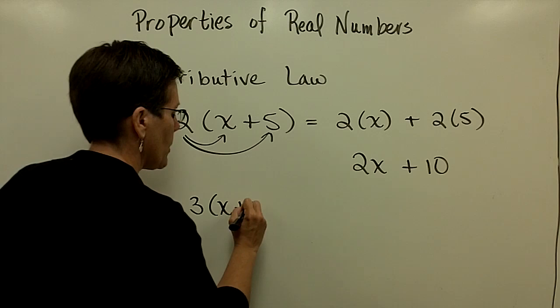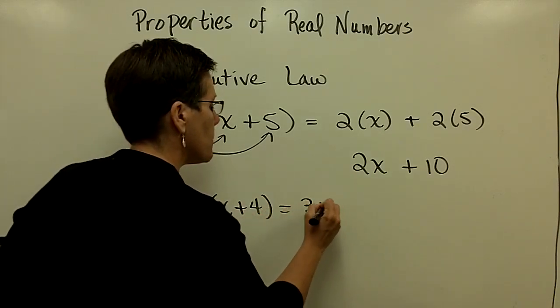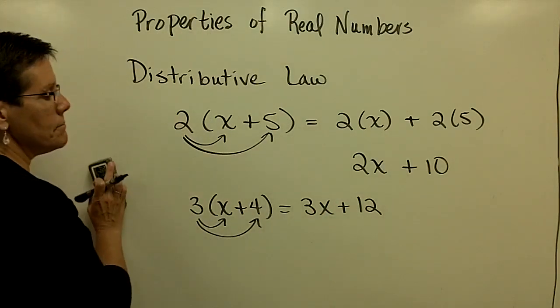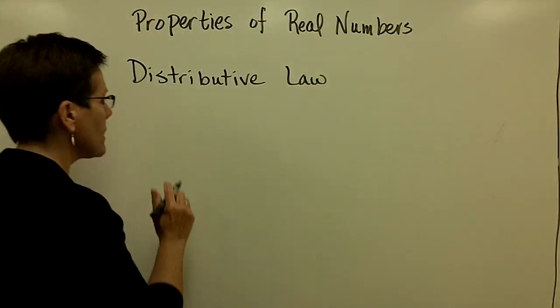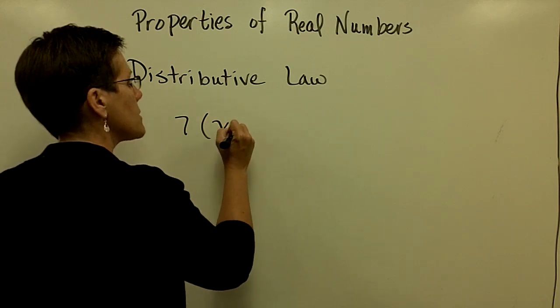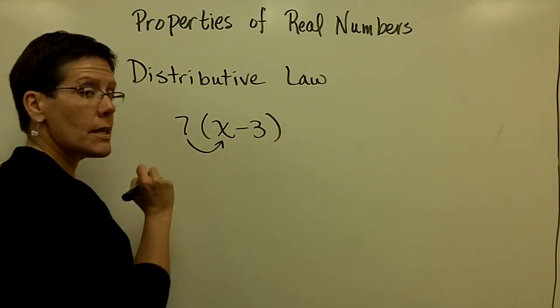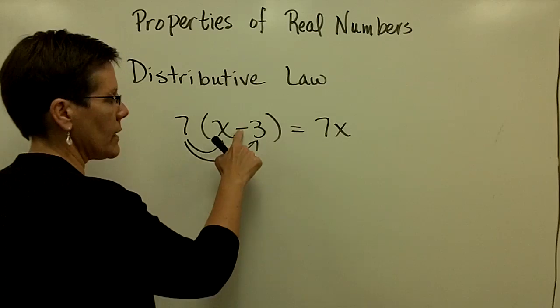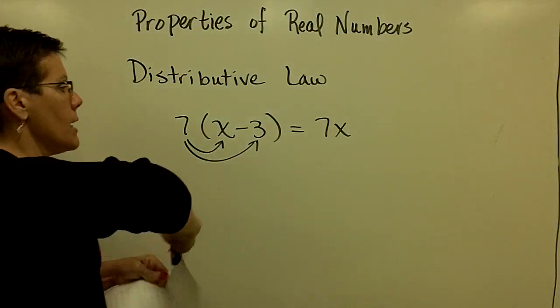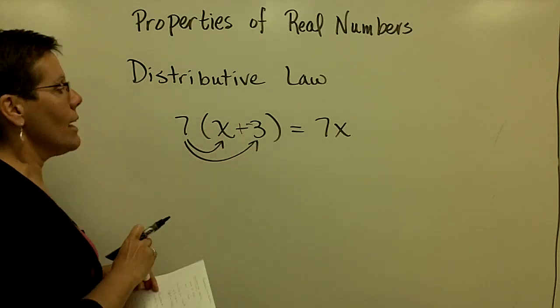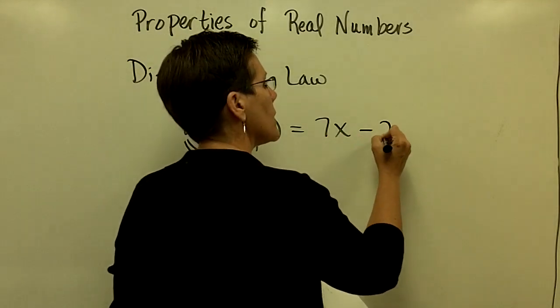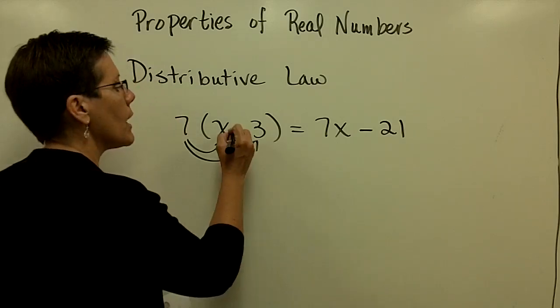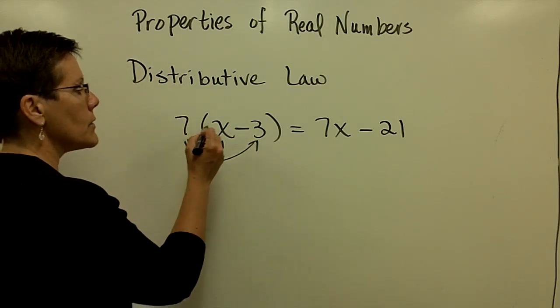Another example. 3 times x plus 4 would give me 3x plus, 3 times 4 is 12. If I had a minus sign, let's just do one more. If I had a minus sign in there, if I had 7 times x minus 3, I'd have 7 times x, which is 7x. And 7 times a negative 3, essentially. That's a negative 3. I'm looking for my red pen. I can think of it like that, plus a negative 21. Or I'm just going to write that as 7x minus 21. I'm going to think of that as a minus 3 or a negative 3. And 7 times that negative 3 is that negative 21.